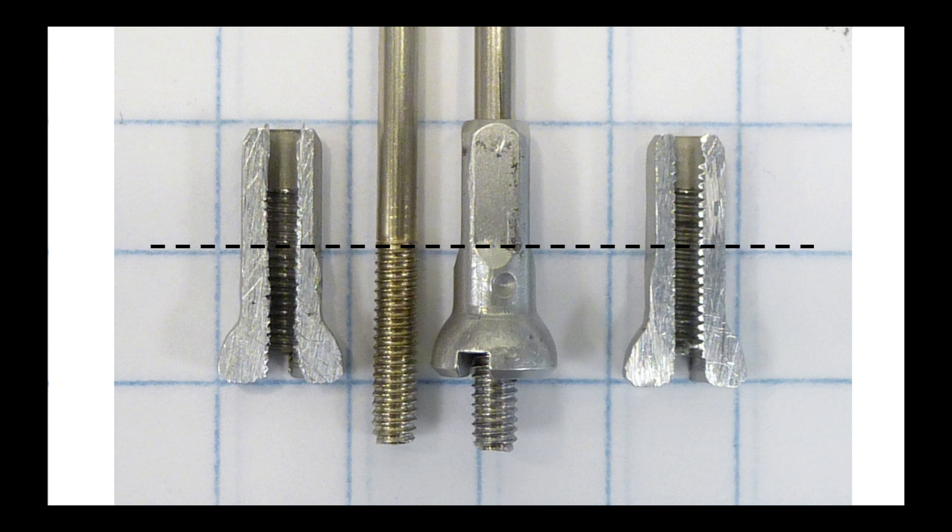And we have the same thing with aluminum nipples. The one on the right is a new nipple, and the one on the left is one where the threads have been flattened by the harder material in the stainless steel spoke.